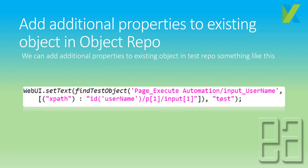So what is adding additional properties to an existing object in the object repo? If you recall from our previous video on dynamic objects, we were finding the test object and modifying it by setting dynamic values. Here, as you can see in the code, we use the findTestObject method but create an entirely new object name and value, then pass the value within the setText method.